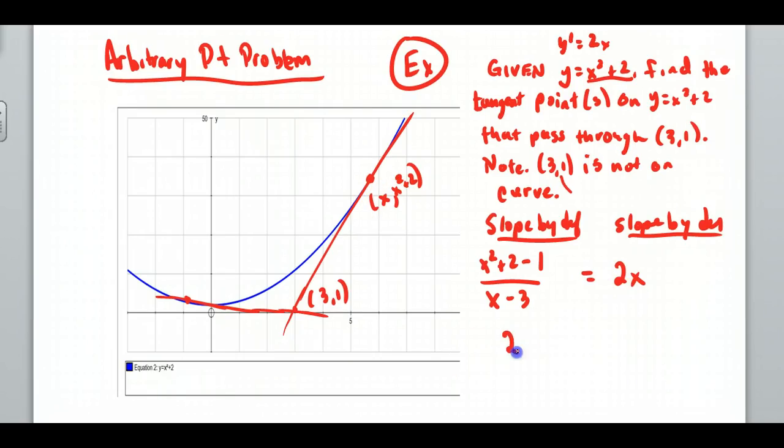Now I go ahead and solve this. I can cross multiply. So 2x times (x minus 3) is equal to x squared plus 1. So I get 2x squared minus 6x. Then I can get x squared minus 6x minus 1 equals 0.